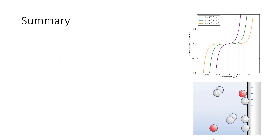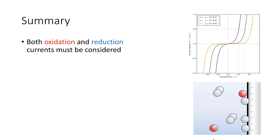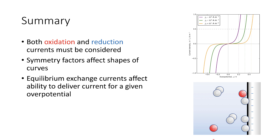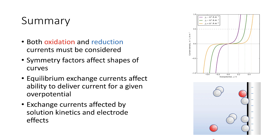When considering current-potential curves, we need to consider both the oxidation and reduction currents because they both contribute towards the process we measure. The symmetry factors — the rate at which oxidation and reduction contribute — affect the shapes of the curves observed. The shape of the curve gives us insight into the processes going on at those electrodes. The exchange current is also worth considering because it affects the ability for a given cell to deliver a current at a given overpotential. These exchange currents are affected directly by solution kinetics and electrode effects.